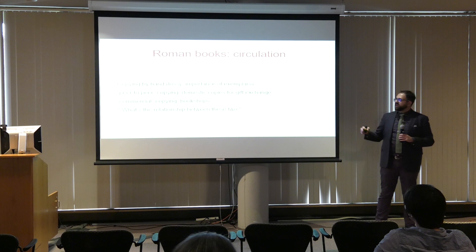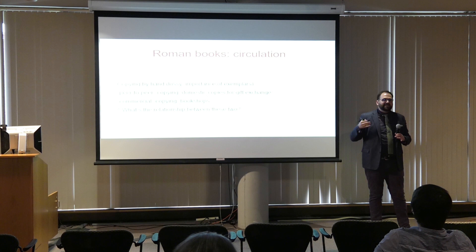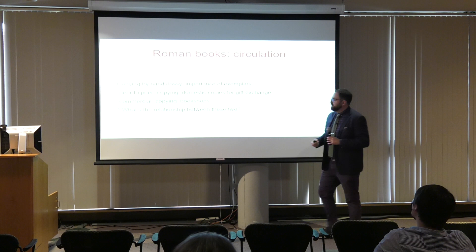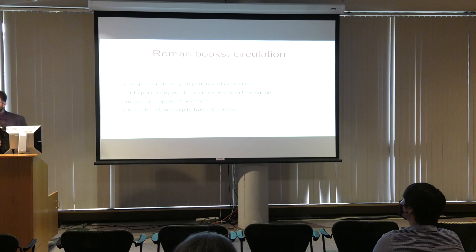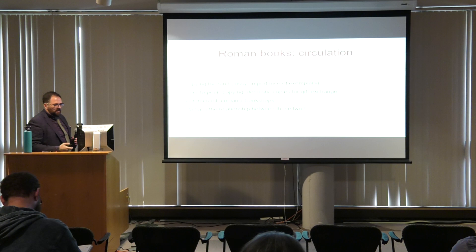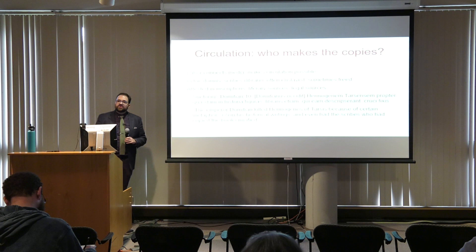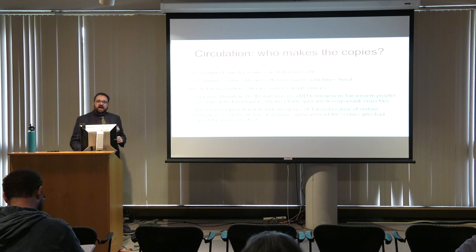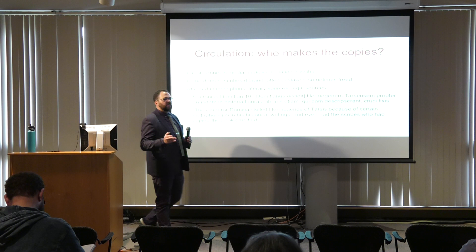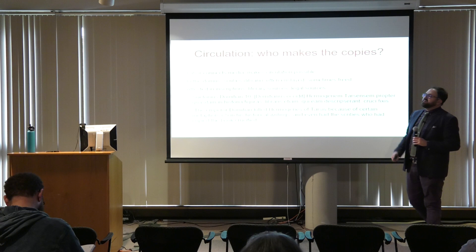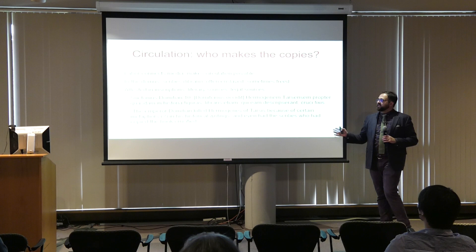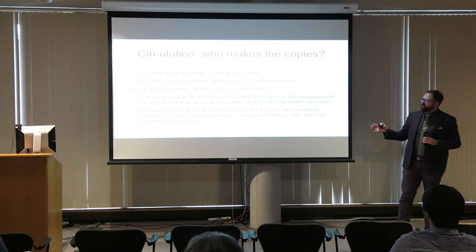How do Roman books get made? They're copied by hand, one from another — what media people would call a lossy form of copying. Every time you copy by hand, you introduce errors. It's also a peer-to-peer copying system, meaning if you want a copy of a book, you have to see if any of your friends have it, borrow it, and make a copy. We also know there are book shops in ancient Rome, though we know very little about them.